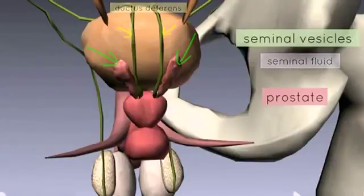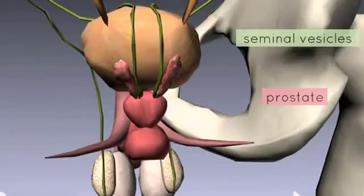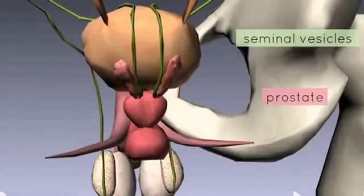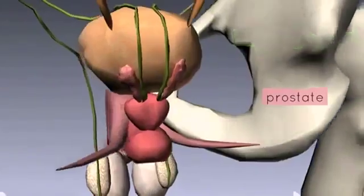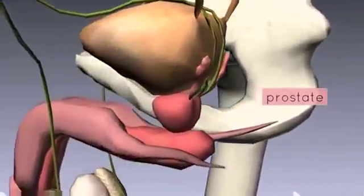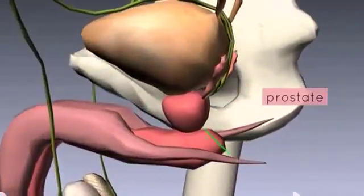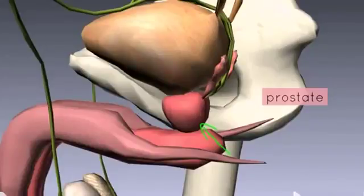The seminal vesicles are responsible for producing seminal fluid, which makes up 60% to 70% of the total volume of semen. This fluid contains proteins, amino acids, prostaglandins, fructose, and several other things. Where the ductus deferens terminates is the prostate gland — this round structure sitting underneath the bladder — which is the largest accessory gland of the male reproductive system.